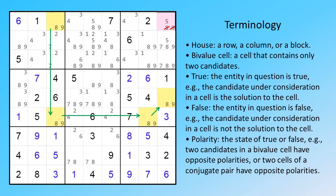House: a row, a column, or a block. By value cell: a cell that contains only two candidates.